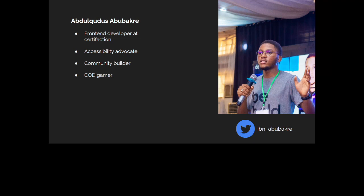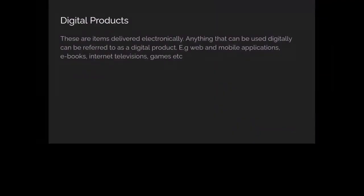So let's dive right into it. Digital products — where exactly are digital products? These are basically anything you can deliver electronically that you can use on your devices: your handsets, your televisions, your laptops, anything electronic. It can be websites, mobile applications, games, movies — anything really can be defined as a digital product.